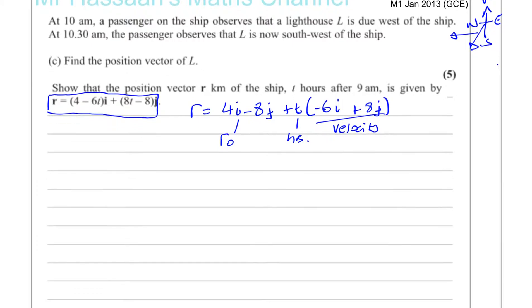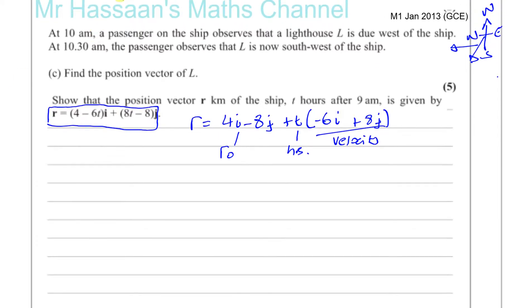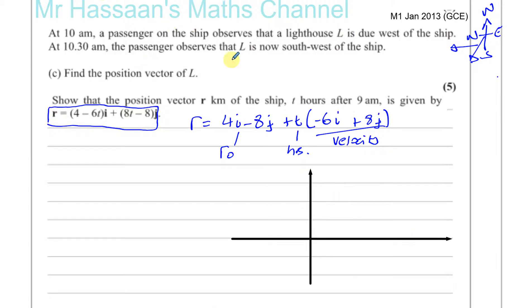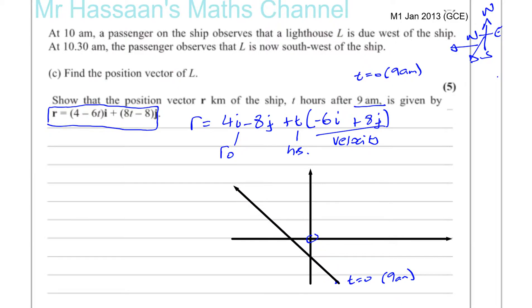To make this more understandable, I'm going to make a sketch to help visualize what's going on. The position at time equals zero — which is nine a.m. — is 4i minus 8j, somewhere down here. That's when this problem starts.